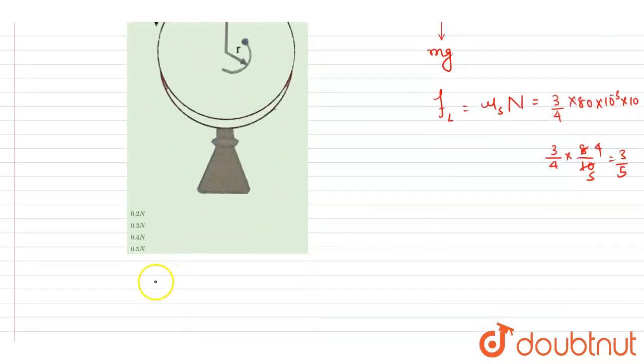So now you can just solve it. I will write down the net reaction force: under root of N square plus f square. So it will be under root of 4 by 5 square is